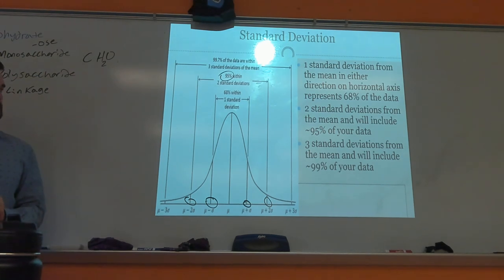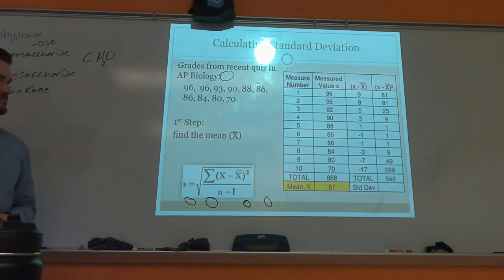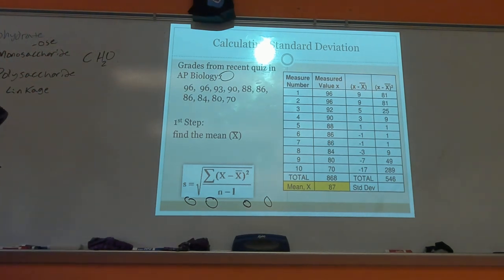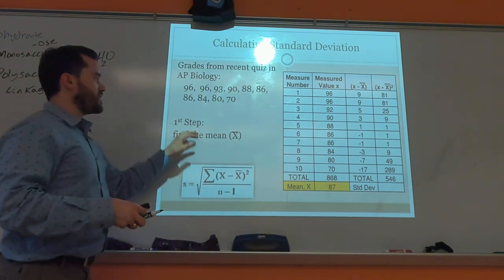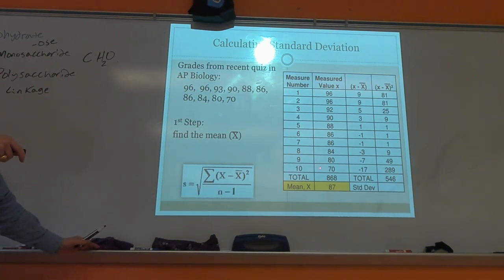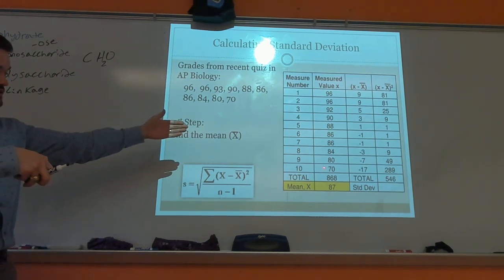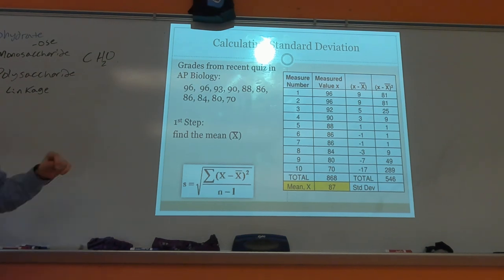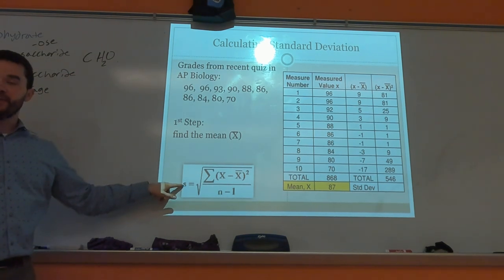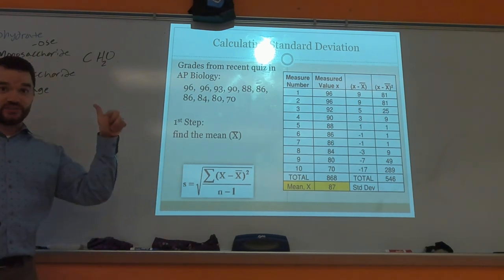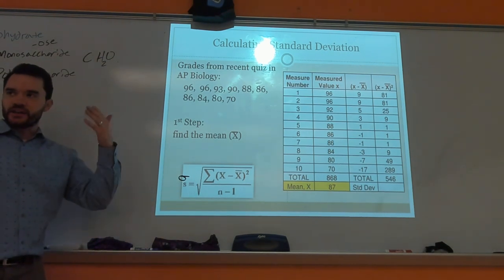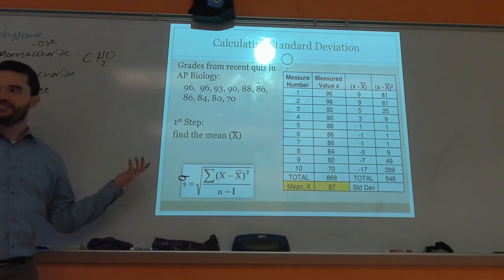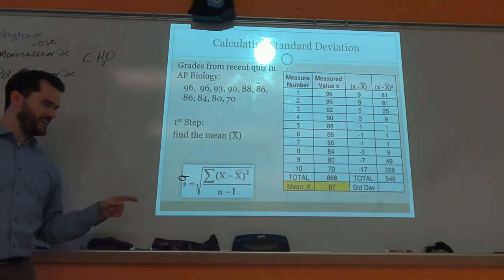To calculate standard deviation, here's your data — for example, quiz scores from AP Biology. First, find the average: add up all quiz scores and divide by the number of scores. This is the standard deviation formula, which is on your formula sheet, so you don't have to memorize it. It can be shown with the symbol s or sigma — don't be confused by the different ways they represent it.